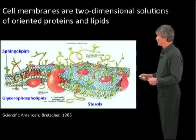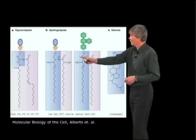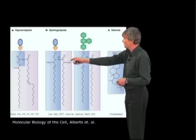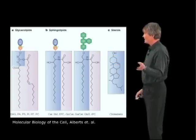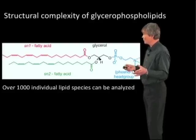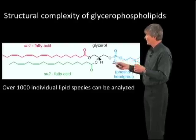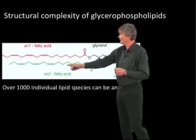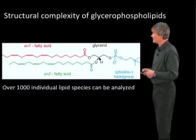Taking the lipids, we have the glycerolipids, sphingolipids, and the sterols. If you look at the glycerolipids more closely, they are very complex. You have the glycerol molecule, the head group, and then the two fatty acids. Over a thousand individual lipid species can be analyzed.